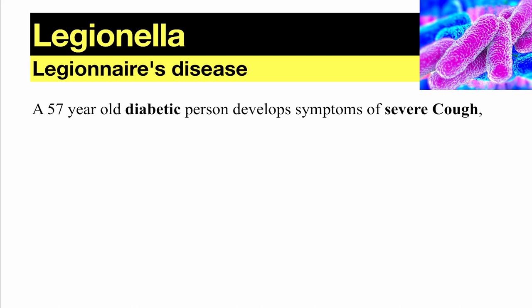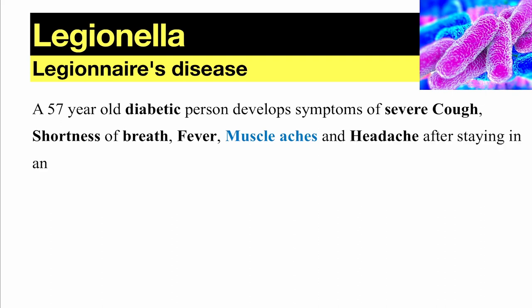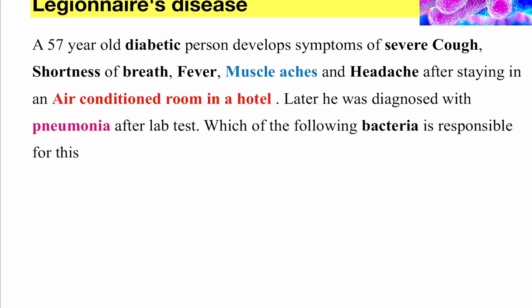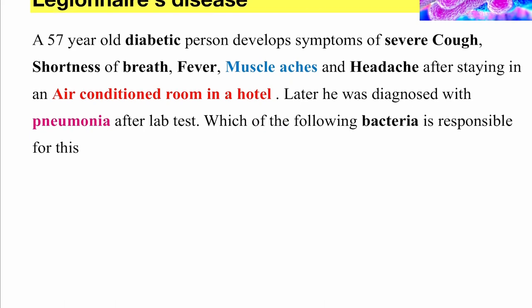Back to the question: symptoms were severe cough, shortness of breath, fever, muscle aches, and headache. The key here is muscle aches. This occurred after staying in an air-conditioned room in a hotel — that is the most important key point. When a question is long, you must search for the key point from your theory knowledge. He was later diagnosed with pneumonia. The question asks which bacteria is responsible.